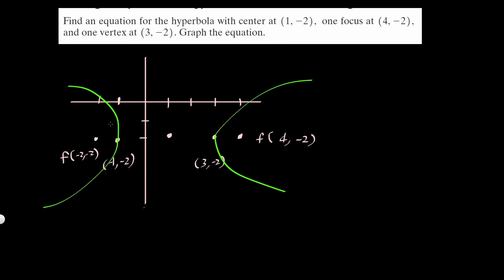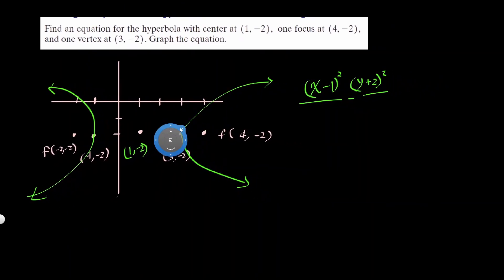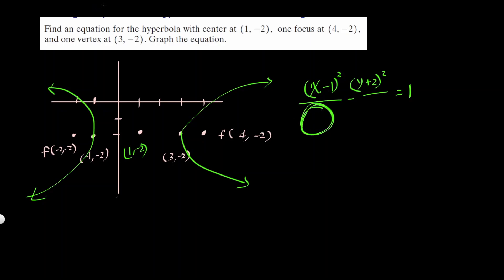It opens left and right, so x is positive and I'll put x first. The center is at (1, negative 2), so it's going to be (x minus 1) squared over something, minus (y plus 2) squared over something, equals 1. The first denominator, under x, is how far the vertex is from the center: 2 units, so a equals 2 and a squared equals 4.